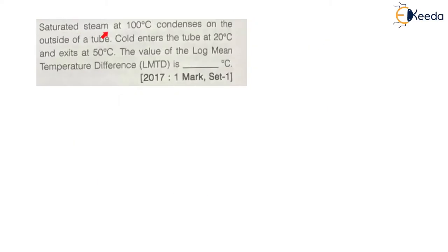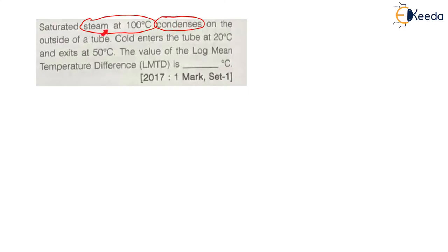The question states: saturated steam at 100 degrees Celsius condenses on the outside of a tube. The saturated steam is a condensate, meaning there will be a phase change — the conversion of steam into liquid. During phase change, temperature does not change. In a condenser, the hot fluid undergoes phase change, so let us draw a condenser here.